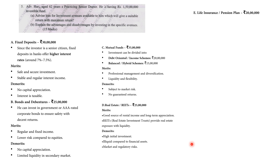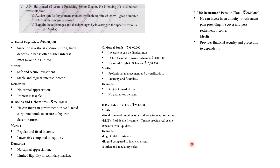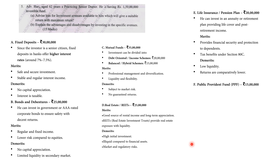Next is Life Insurance: ₹20,00,000. He can invest in an annuity or retirement plan providing life cover and post-retirement income. Merit: provides financial security and protection to dependents, and tax benefit is available under Section 80C. Demerits: low liquidity and returns are comparatively lower.